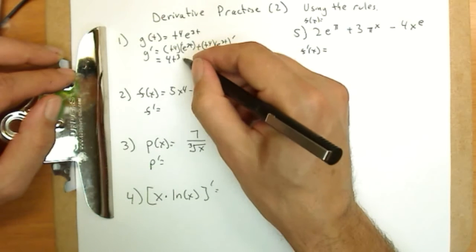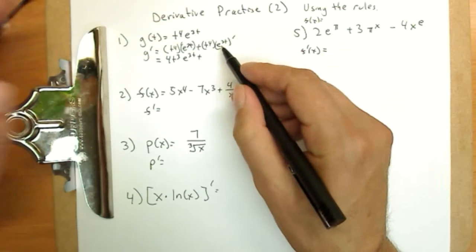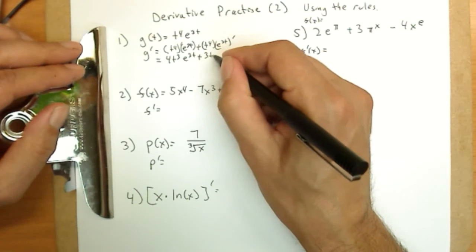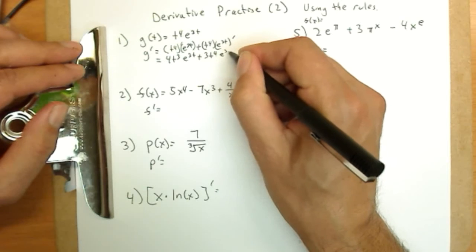e to the three t, plus the derivative of e to the three t, the three would come out in front. I'm going to put it all the way over here. 3t to the fourth, e to the three t.